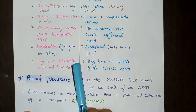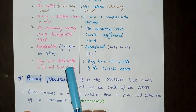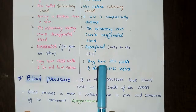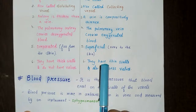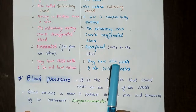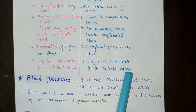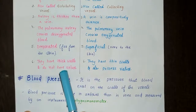Arteries have thick walls and do not have valves, whereas veins have valves. The valves are present in veins but not in arteries.